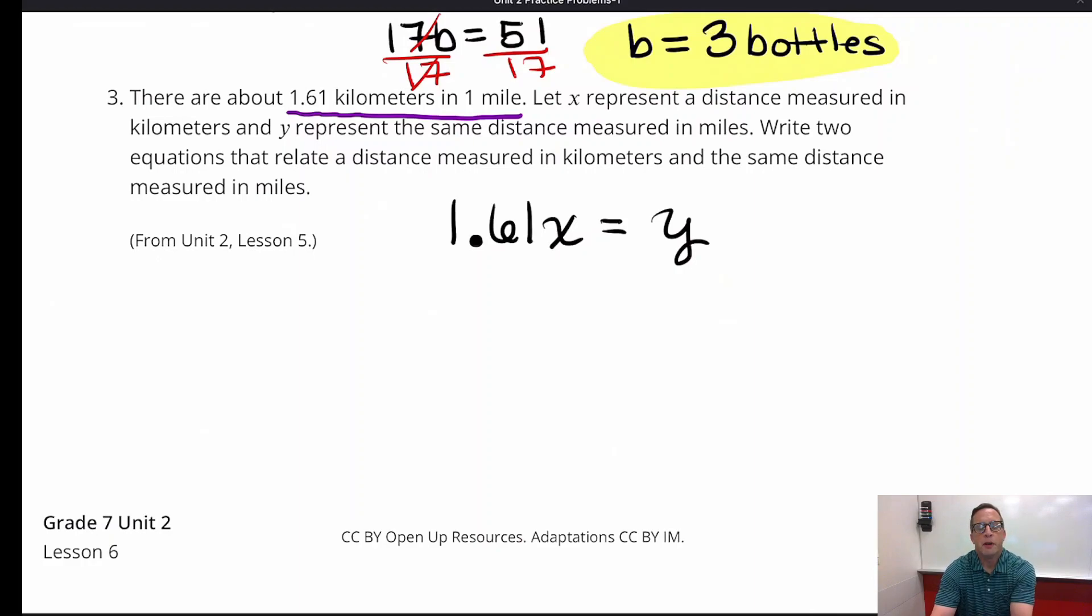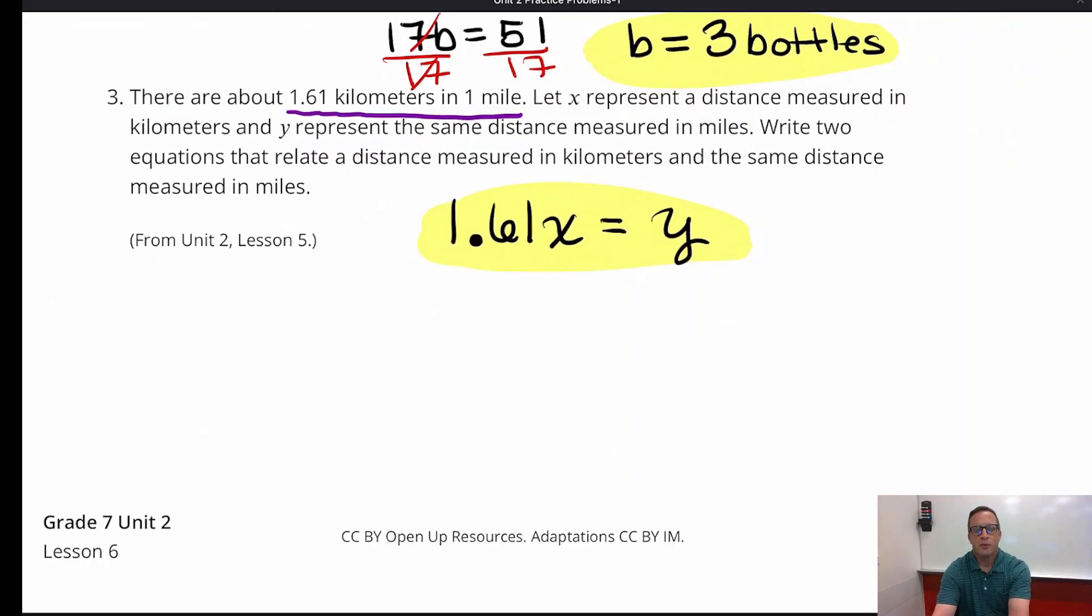So there's 1.61 kilometers in a mile. And so if we want to know what two miles is, we would just do 1.61 times 2, and that will tell you how many kilometers there are. If we want to know what's in five miles, just do 1.61 times 5. Alright, so that's one equation right there. And then the other equation wants us to get X by itself. So I'm going to divide Y. This time you're going to divide Y by 1.61. So you're going to make it X equals Y divided by 1.61.